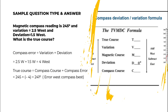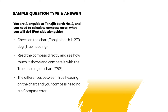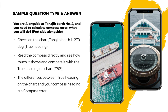Next sample question: You are alongside at Tanaji Berth Number Four and you need to calculate the compass error. You are port side alongside. I will check the chart — the Tanaji berth has a true heading of 270°. Then go to your compass, read it directly, and compare it with the true heading on the chart which is 270°. The difference between the true heading on the chart and your compass heading is the compass error.